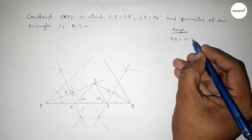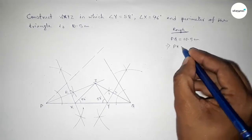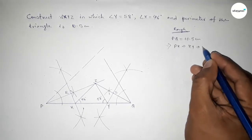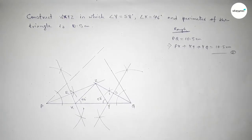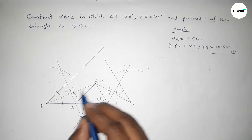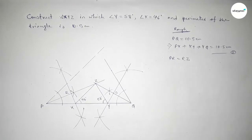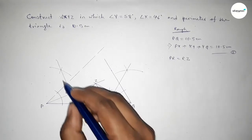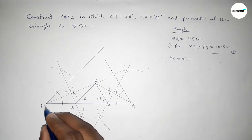Now discussing some important calculations. Given PQ equals 10.5 centimeters. We can write PQ as PX plus XY plus YQ equals 10.5 centimeters. This is our first relation. The line PZ is bisected by the perpendicular bisector through point R into two equal parts, so PR equals RZ.